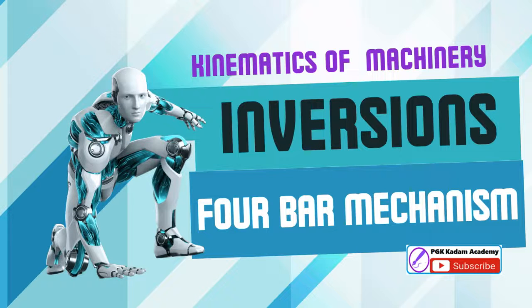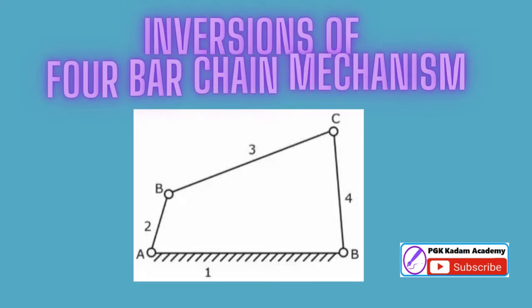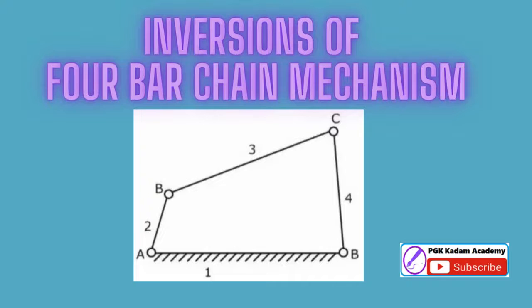Inversions of four-bar chain mechanism. When one of the links is fixed in a kinematic chain, it is called a mechanism. We can obtain as many mechanisms as the number of links in a kinematic chain by fixing, in turn, different links. This method of obtaining different mechanisms by fixing different links in a kinematic chain is known as inversion of the mechanism.